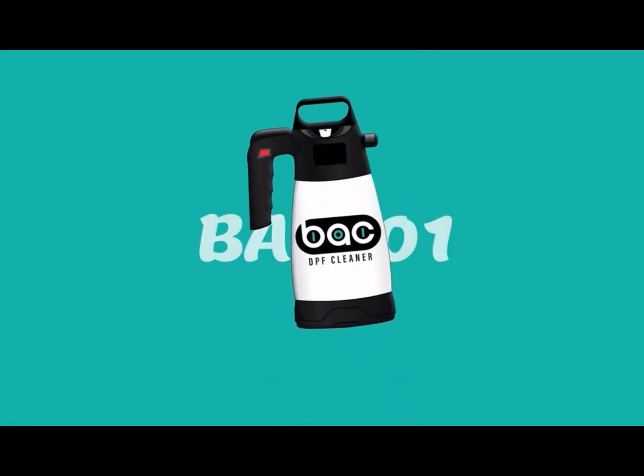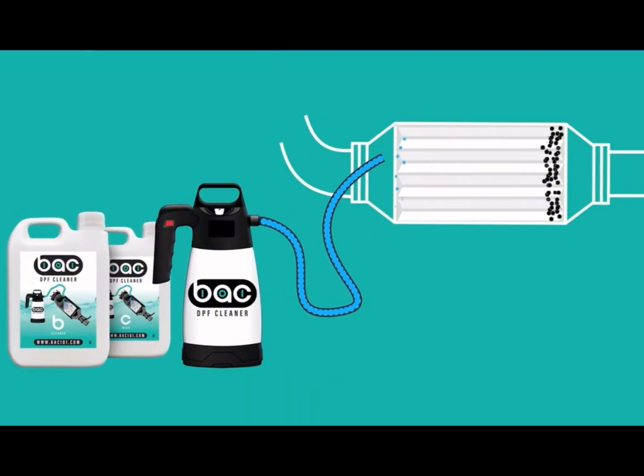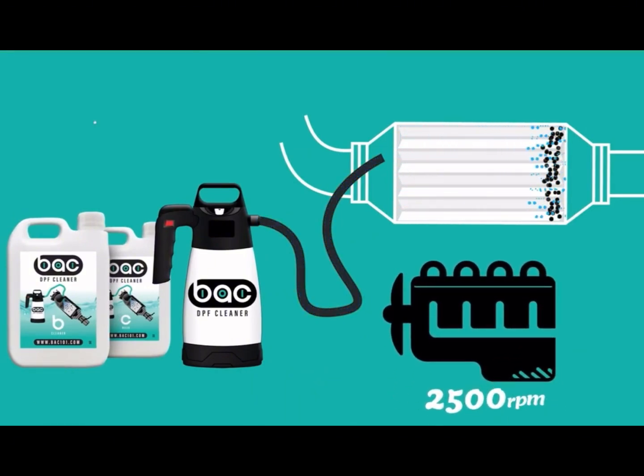Using BAC 101 is an easy task thanks to our patented spray pump that connects to the vehicle's DPF and is as simple as spray liquid B with the engine running at 2,500 rpm. Wait 15 minutes and then spray liquid C.